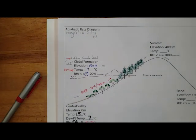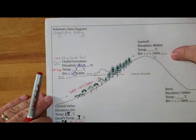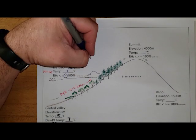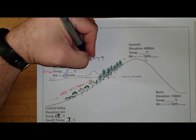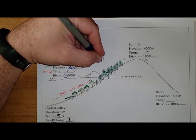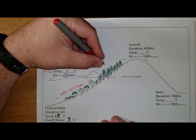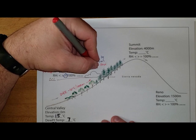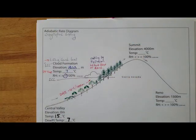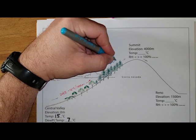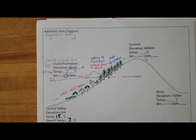Now, once we are at that lifting condensation level, if the air mass continues to rise, we know that we're going to be getting condensation. And so what we need to compensate for is cooling by expansion, but warming by latent heat of condensation. And so both of those combined give us our moist adiabatic rate, our MAR of negative 6 degrees Celsius per 1,000 meters that it goes up until it reaches the very summit.